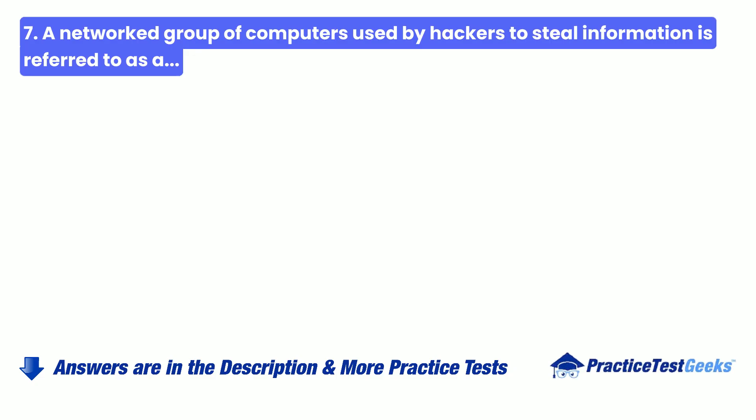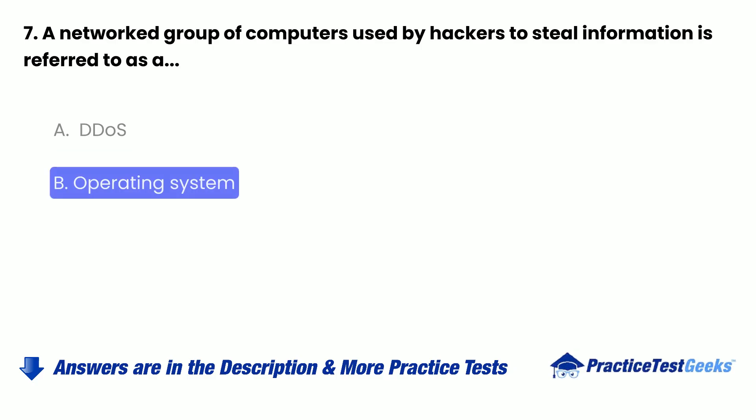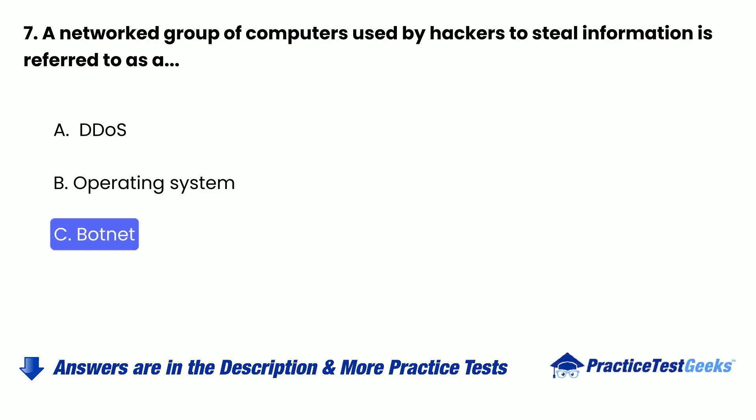Question 7: A networked group of computers used by hackers to steal information is referred to as a: a. DDoS. b. Operating System. c. Botnet. d. Rootkit.